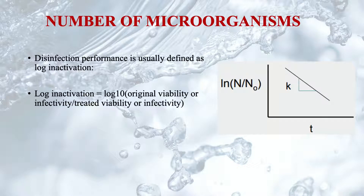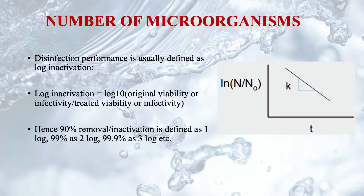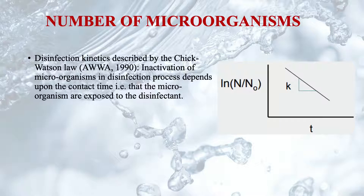Another factor is the number of microorganisms, which affects the process of disinfection, as their inactivation may require a reasonable time period for effective removal from the system. The performance of disinfection process is usually defined as log inactivation, which is the logarithm of the ratio of original viability or infectivity to the treated viability or infectivity. Hence, 90% removal is defined as 1 log, 99% removal is 2 log, and 99.9% removal is 3 log.